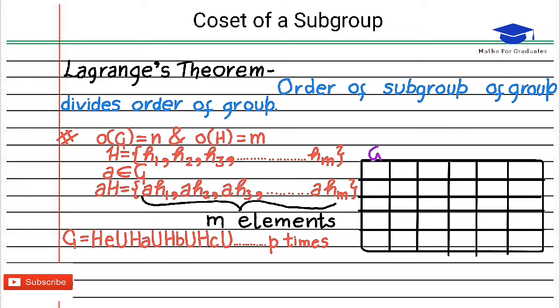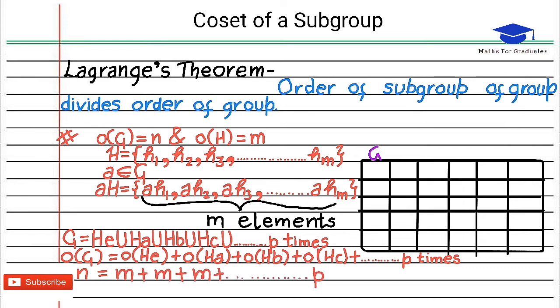Now order of G will be order of He plus order of Ha plus order of Hb plus p times. Order of G is n and order of all the cosets is m.